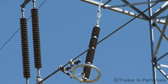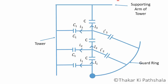Then there is the third method: to use guard rings. The voltage level across each unit in a string can be equalized by using a guard ring, which is a metal ring electrically connected to the conductor and surrounding the insulator disc. The guard ring adds some capacitance between the metal fittings and the line conductor. It is positioned in such a way that the current flowing from the guard ring equals the flowing shunt capacitance currents, and these currents are added into the currents flowing through the mutual capacitance. So the current flowing through each disc remains equal and ultimately we get better string efficiency.